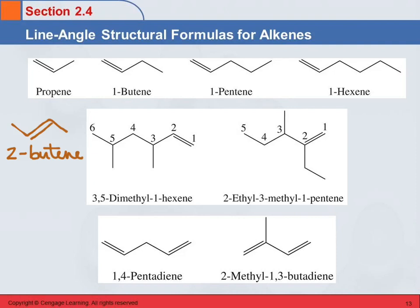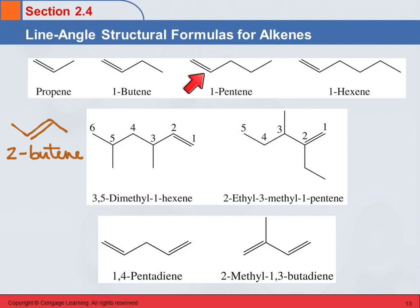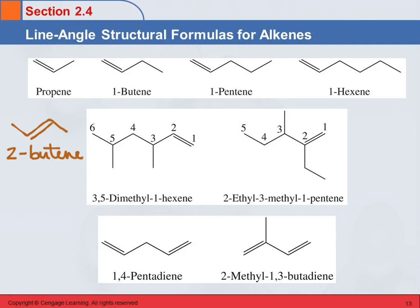They use 'one' here because there's another isomer. These two are different, so if we just said 'butene' it might be confusing which one we mean. For propene, there is no 2-propene — there's only the one, so we can leave the number off. This is 1-pentene — five carbons, so pentane becomes pentene, and we could have different isomers based on where the double bond is. This is 1-hexene: six carbons with the double bond at the end. Those are the straight chain alkenes.